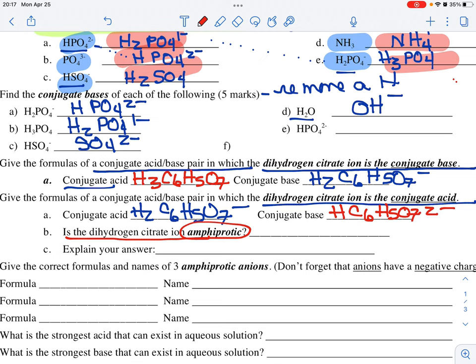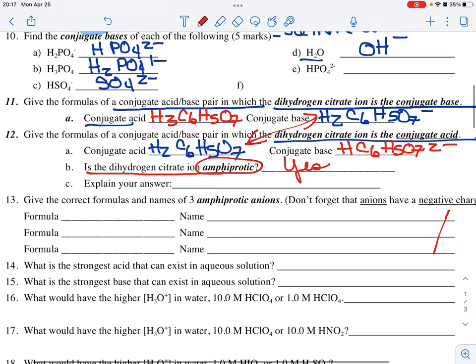Then, is dihydrogen citrate amphiprotic or amphoteric? And the answer is yes, because it exists as both an acid and a base. So, yes, it is amphoteric. I'm going to write, can act as an acid or a base.